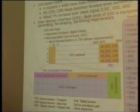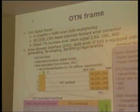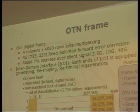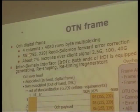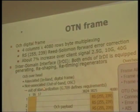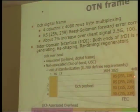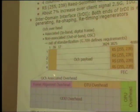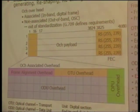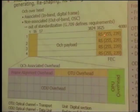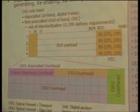This is a detailed description of OTN and the frame. This frame is composed of four columns and 4,080 rows of multiplexing. And actually, this is a forward error correction, so-called RS(255,239). It's a Reed-Solomon type forward error correction employed.